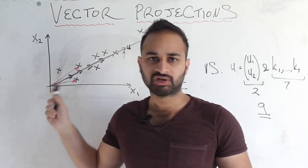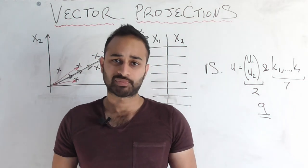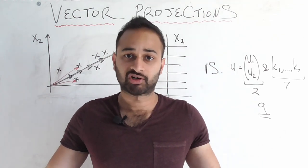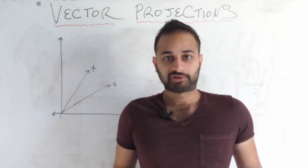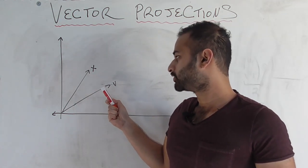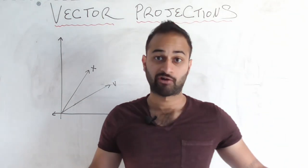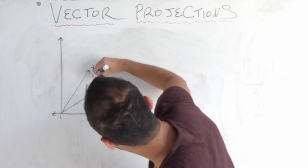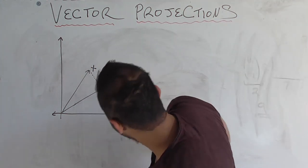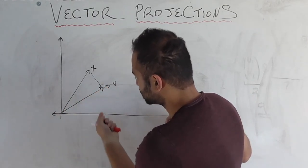So that is the geometry behind vector projections and why they're important for data science. The last part of this video will use this geometry to derive the algebra behind vector projections. We have vector x and we want to project it onto vector v. Geometrically, we draw a perpendicular down to v, giving us vector p starting at the origin and ending along v — that's our answer, which we want to find algebraically.